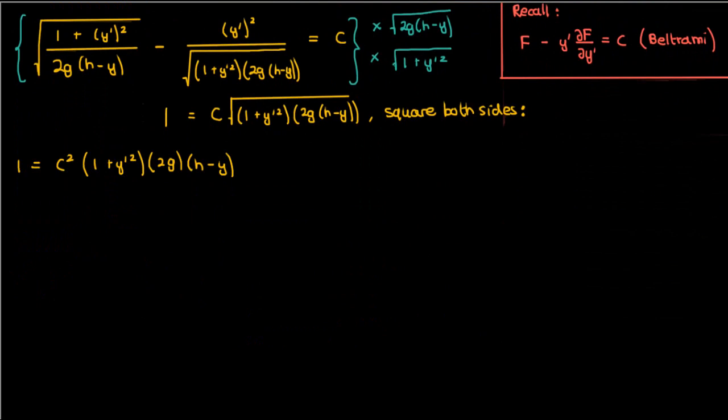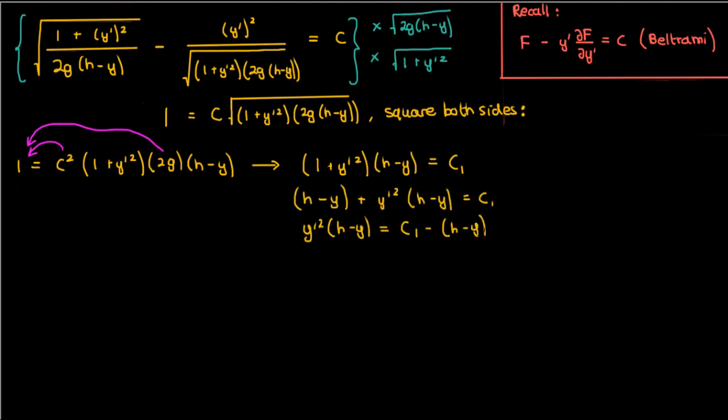2g is just a constant, so if we move the 2g and the c squared to the other side, the resulting lump of constants will be another constant that I'll call c1. Let's now isolate y prime. We'll start by partially expanding out the left, moving the (h minus y) to the right, dividing both sides by (h minus y), and then taking the square root.